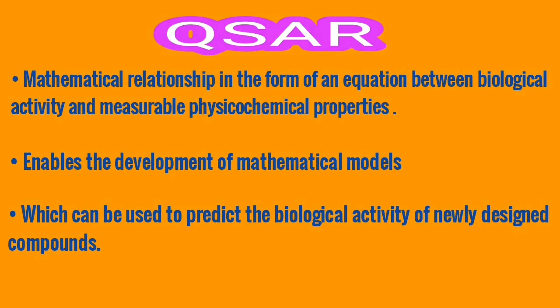This is the second class of QSAR. In this class we are going to see the physicochemical properties and how they are related to biological activity. QSAR is a mathematical relationship in the form of an equation that connects biological activity and physicochemical properties. It enables the development of mathematical models used to predict the biological activity of a new drug in advance.